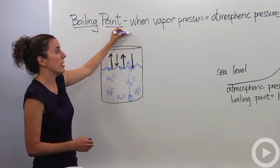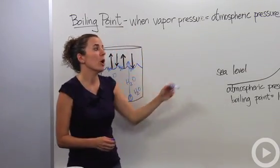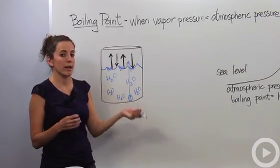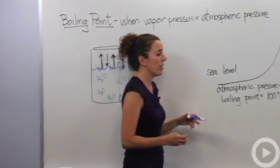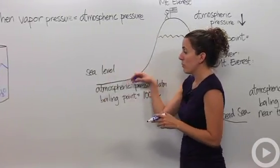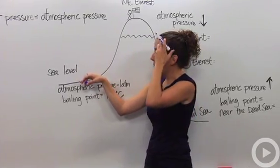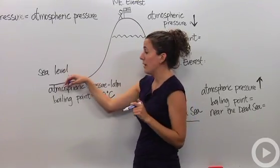So understanding this definition, when vapor pressure equals atmospheric pressure, we're going to talk about the boiling point in different areas on Earth. At sea level, where we typically are, where I live in DC, I live at sea level,